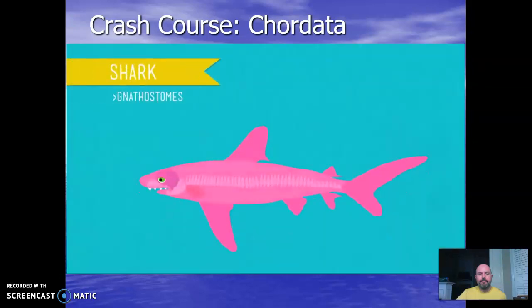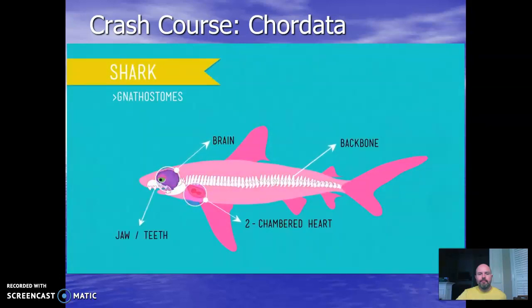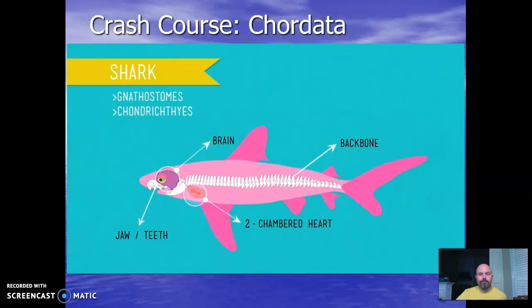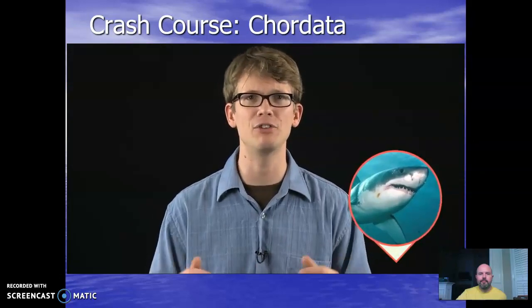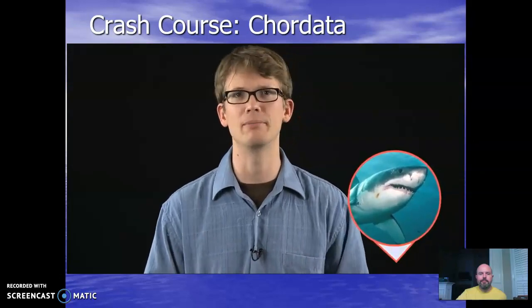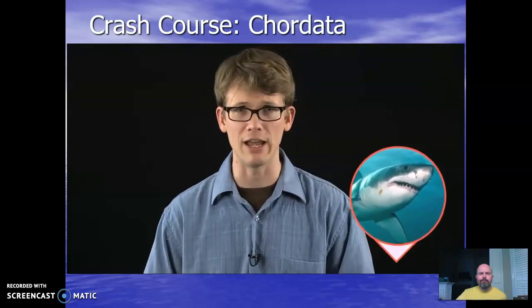Gnathostomes, or jaw-mouths, came on the scene about 470 million years ago. One of the oldest and most successful groups that have survived to the present day is class Chondrichthyes — the cartilaginous fish — known as sharks, skates, and rays. Their skeletons are made mostly of cartilage, though they show the beginnings of a calcified skeleton. Chondrichthyes haven't changed much over the past 300 million years.